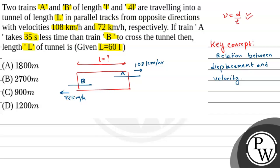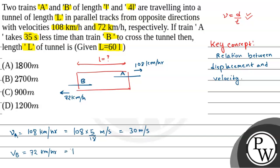In this question, we are given that velocity of train A, that is V_A, equals 108 km per hour. Converting: 108 × 5/18 = 30 metres per second. And velocity of train B is 72 km per hour, which equals 72 × 5/18 = 20 metres per second.